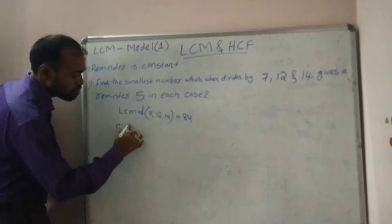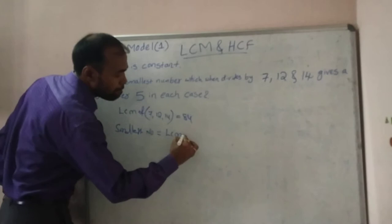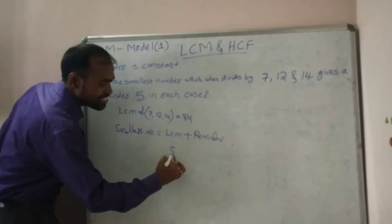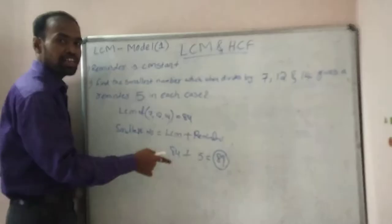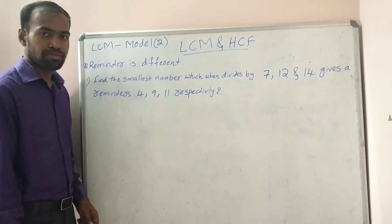The smallest number is LCM plus the remainder. The LCM is 84 and the remainder is 5, so the answer is 89. You can verify: 89 divided by 7, 89 divided by 12, and 89 divided by 14 each gives a remainder of 5. This is the first model.